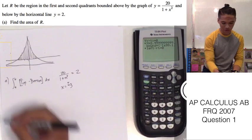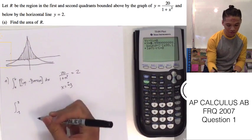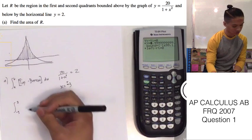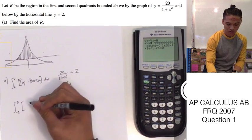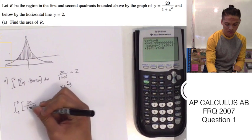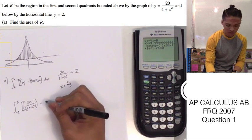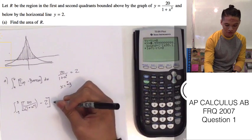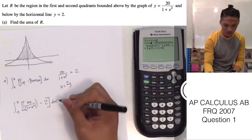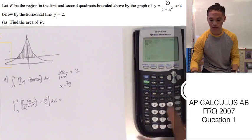And now we can set up our integral function. Negative 3 to positive 3 of our top function, which is 20 over all of 1 plus x squared, and subtract our bottom function from this with respects to x. Go ahead and plug this into our calculator. Math 9. Negative 3 to 3.